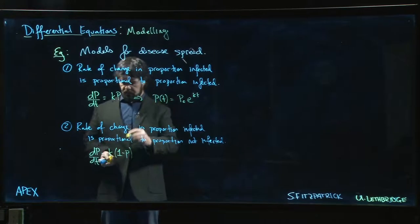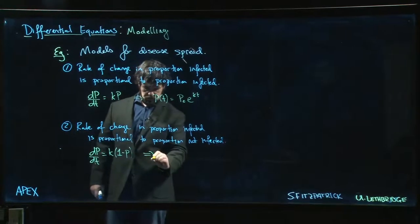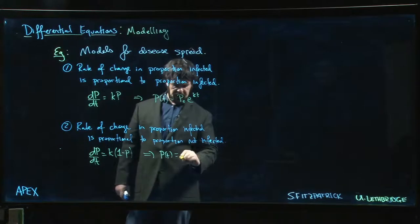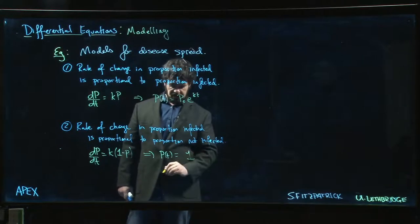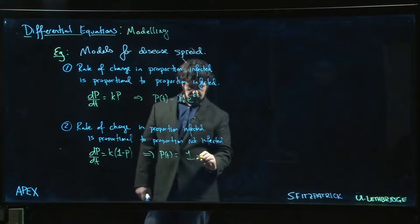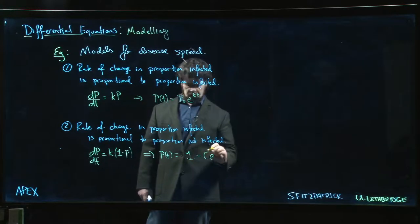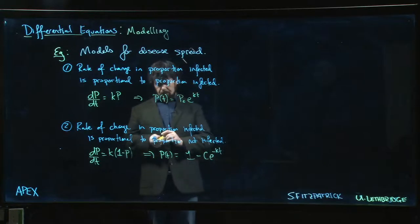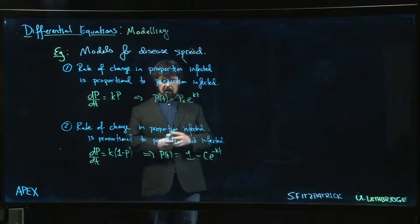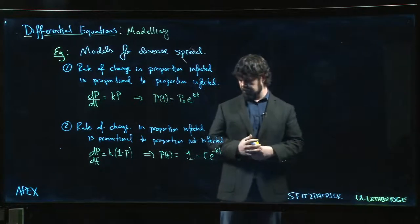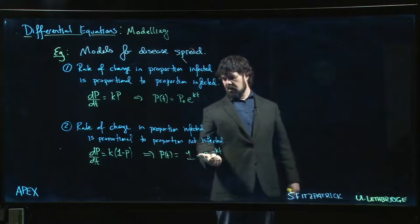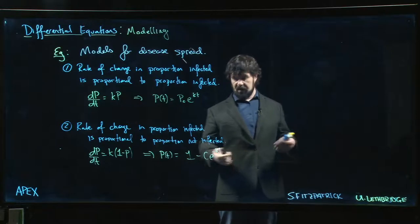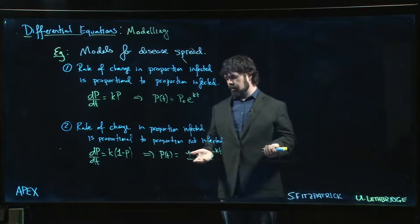Well, this is essentially Newton's law of cooling. We know how to solve this. We know that this looks like p of t—before we had like an A for the ambient temperature, now we just have one minus some constant value e to the minus kt. And this maybe works a little bit better, at least in the long run. As t goes to infinity, the proportion infected is going to approach one because that's going to go to zero and certainly never exceeds one.